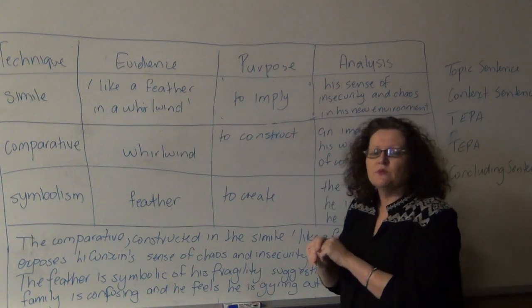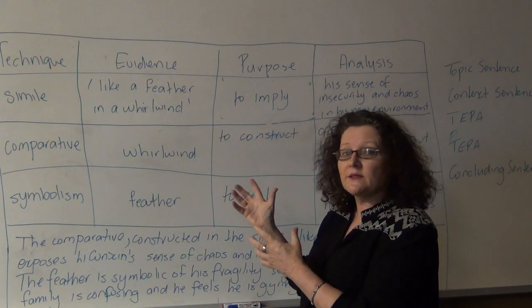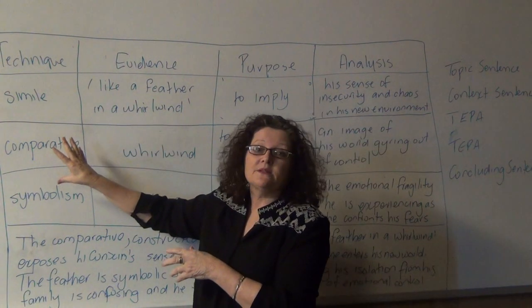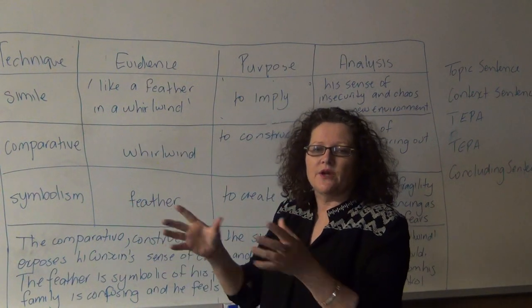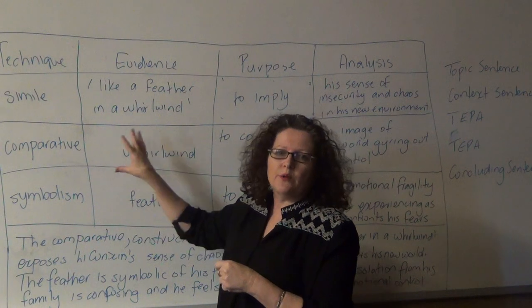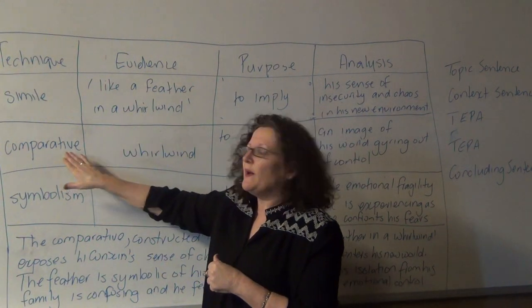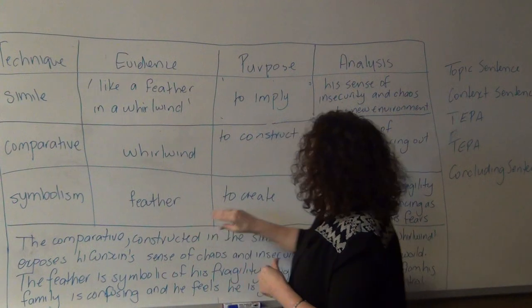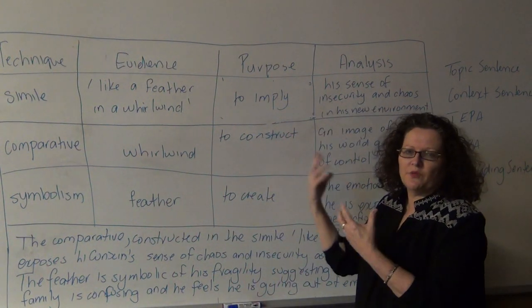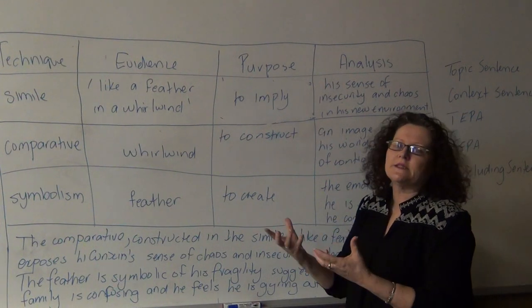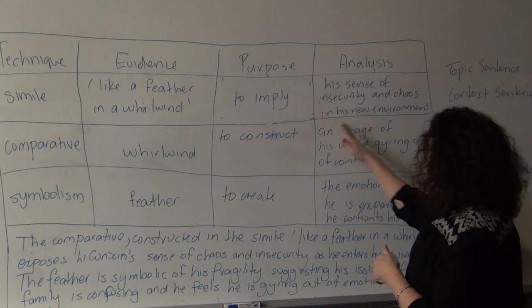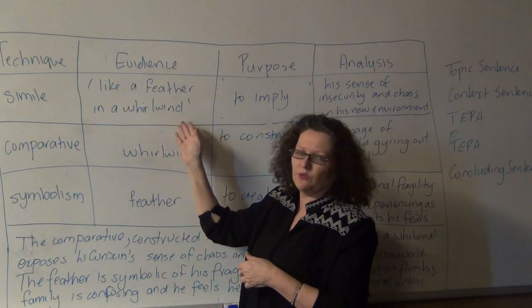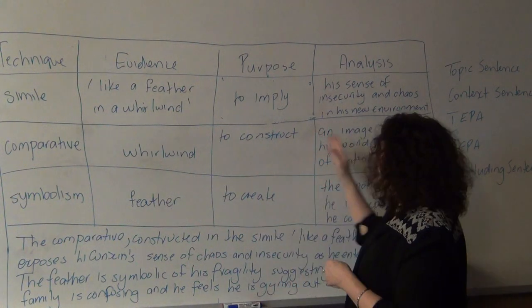That would be very nice as a simple sentence. But if we want to build our knowledge of techniques and show that we understand techniques do more than just something at the simplest level, we can start building. A simile is always a comparative — it compares two things. Here, the comparative is his life as being in a whirlwind, constructing that particular image. If we think of a whirlwind jarring out of control and spinning, it can pick us up and throw us away. So, the comparative constructed through the simile, 'like a feather in a whirlwind,' emphasises that his life is jarring out of control.